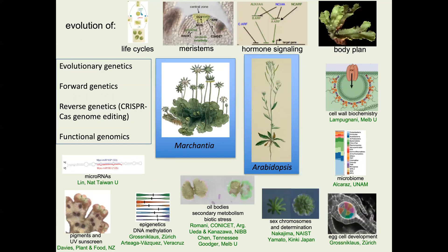In my lab we use two model organisms: Marchantia, which is a liverwort, and Arabidopsis, which is a flowering plant. These sit at basically opposite ends of the phylogenetic tree of land plants, so by comparing these two species, you're comparing across basically all of land plants.